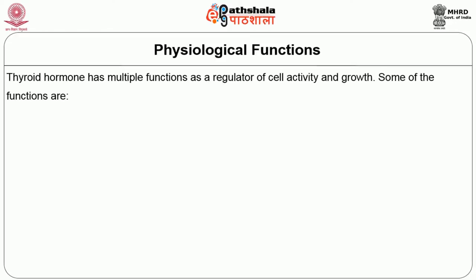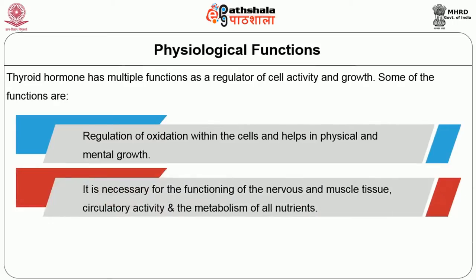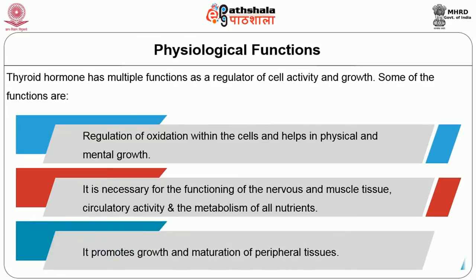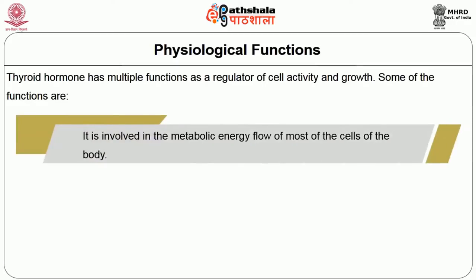Let us start with the biological role of iodine. Thyroid hormone has multiple functions as a regulator of cell activity and growth. Some of the functions are regulation of oxidation within the cells, and helping in physical and mental growth. It is necessary for the functioning of the nervous and muscle tissue, circulatory activity and the metabolism of all nutrients. It promotes growth and maturation of peripheral tissues.